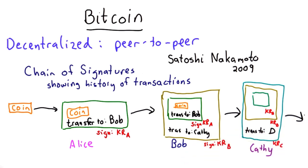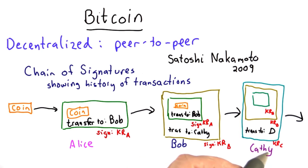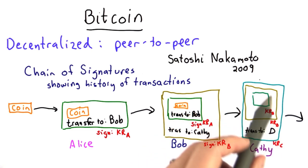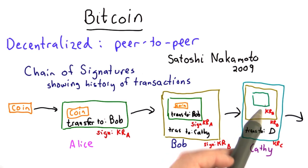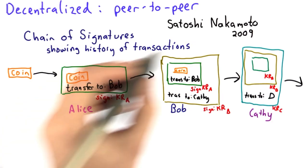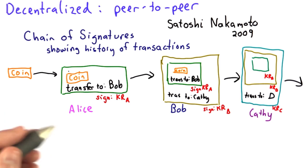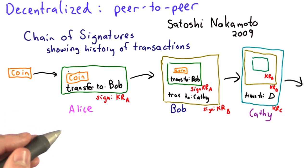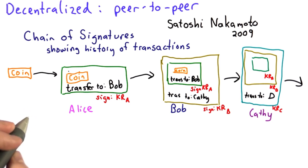Then she can transfer it on to Doug. Every link in this chain, as long as they have all the public keys they need, can verify the entire history of transactions. Cathy can verify the signature of Bob, open that up, verify the signature of Alice inside it, and verify the original coin. This is a way to use public key cryptography to keep track of an entire history of transactions.